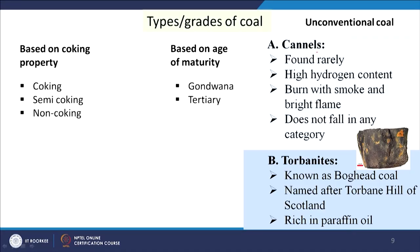Coal can also be classified based on age: Gondwana and tertiary, as already discussed. Apart from conventional coal, some unconventional coals exist around the world where the seam is very limited, scattered, and of not very high quality. One is cannel coal, which is found rarely, has high hydrogen content, burns with smoke and bright flame, and does not fall into any standard category. Another is torbanite, also known as boghead coal, named after Torban Hill in Scotland; it is rich in paraffins and oil.